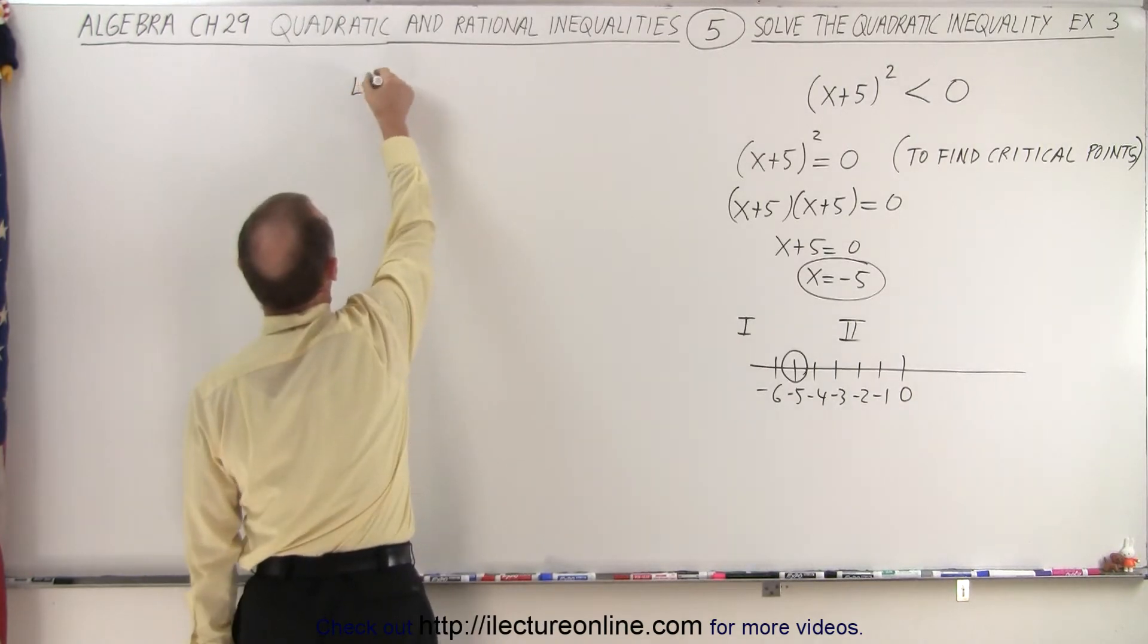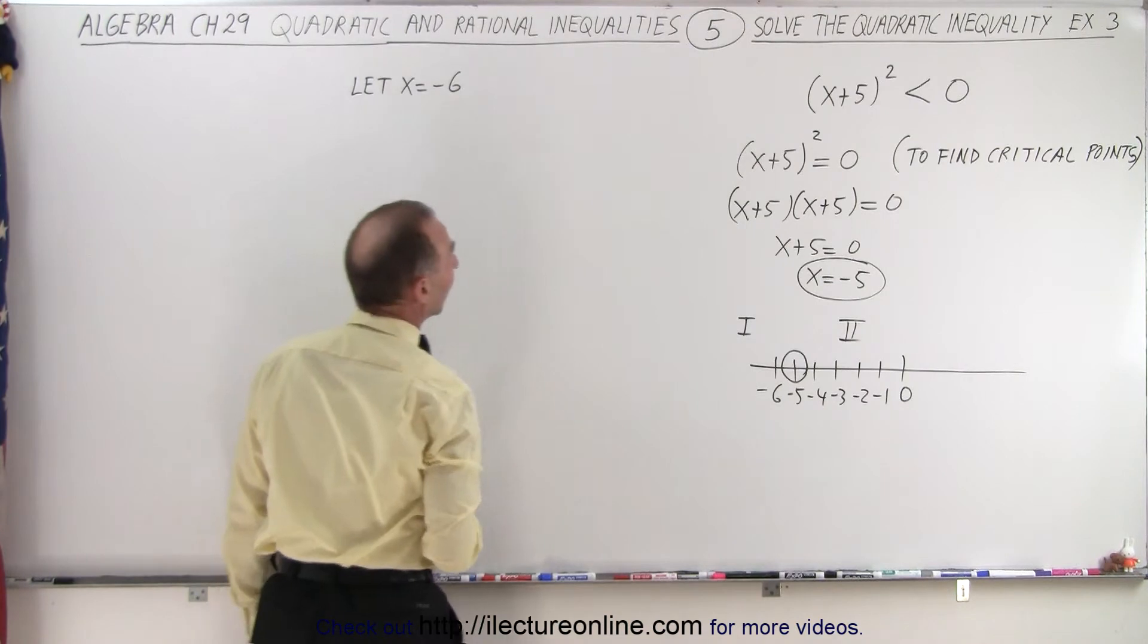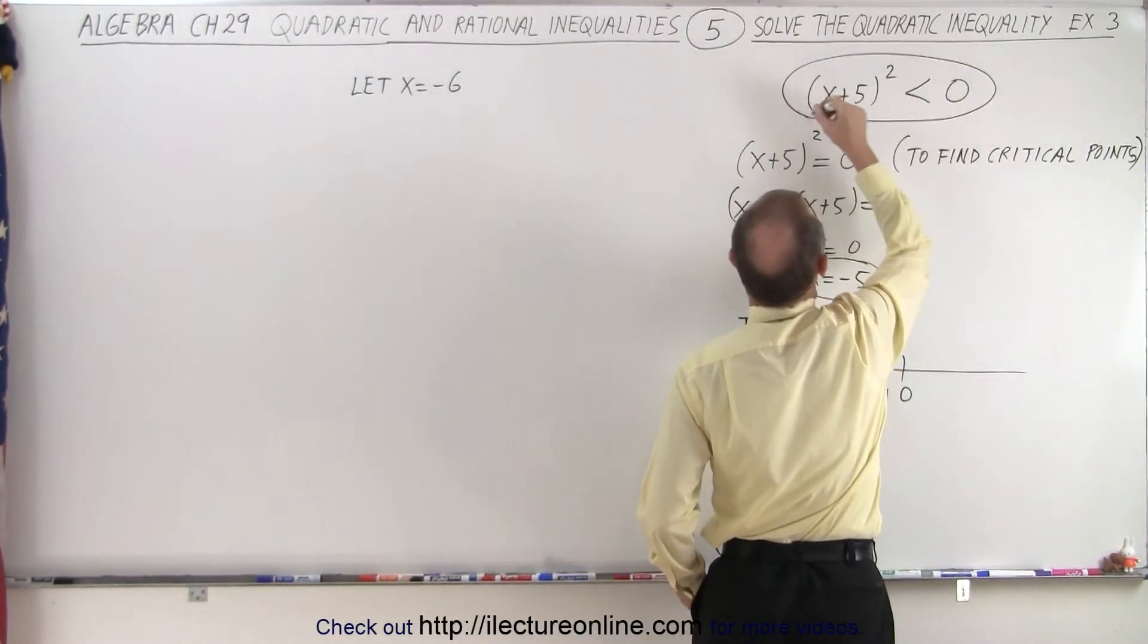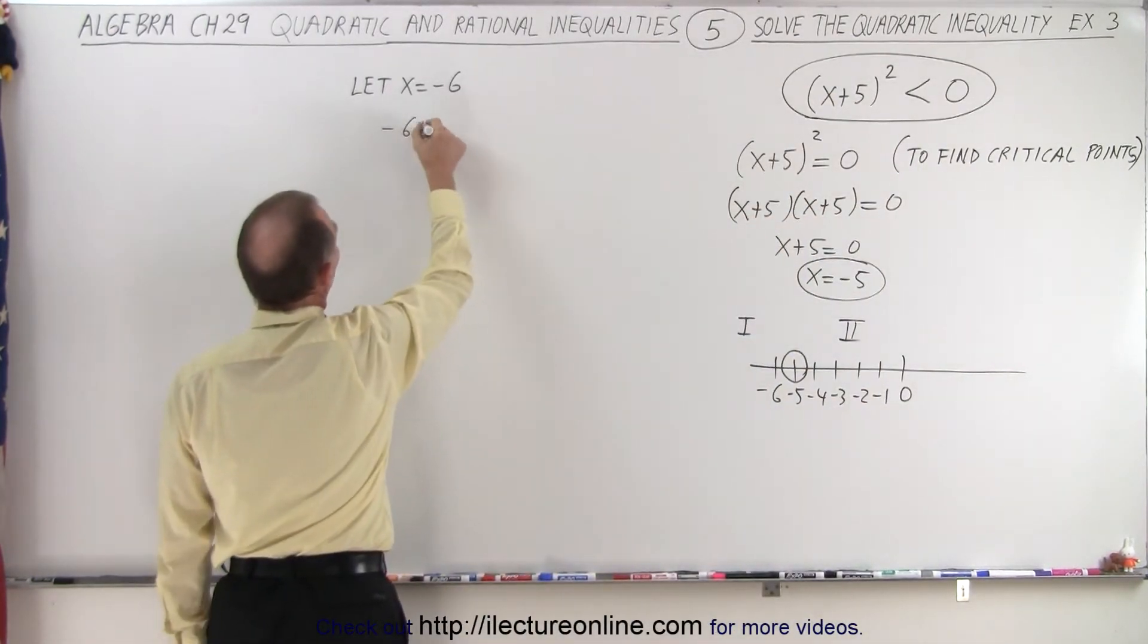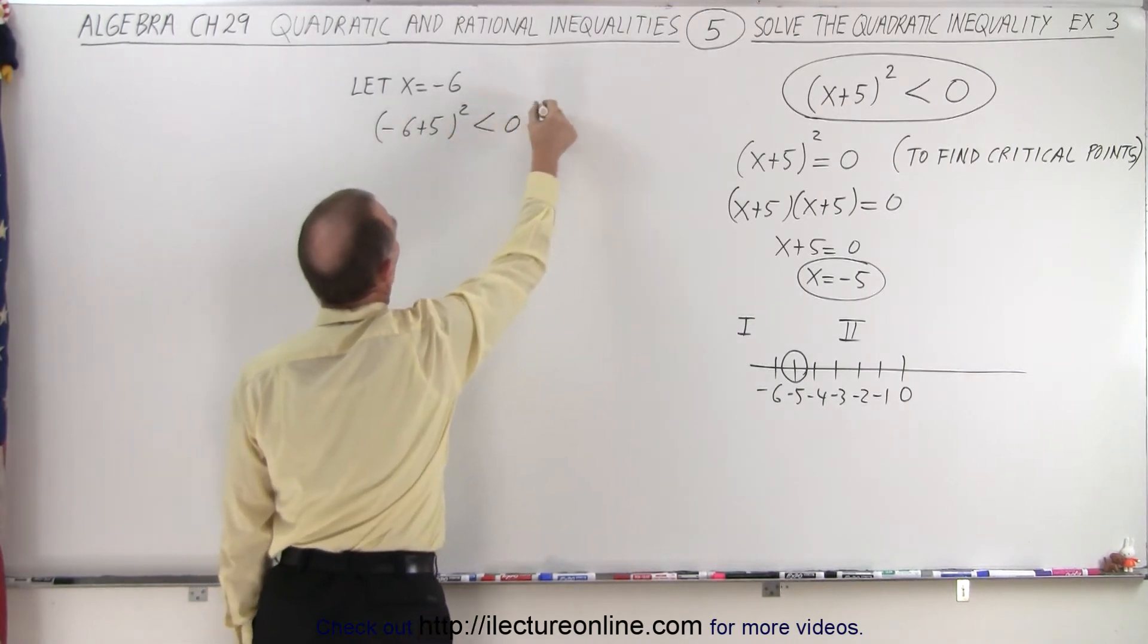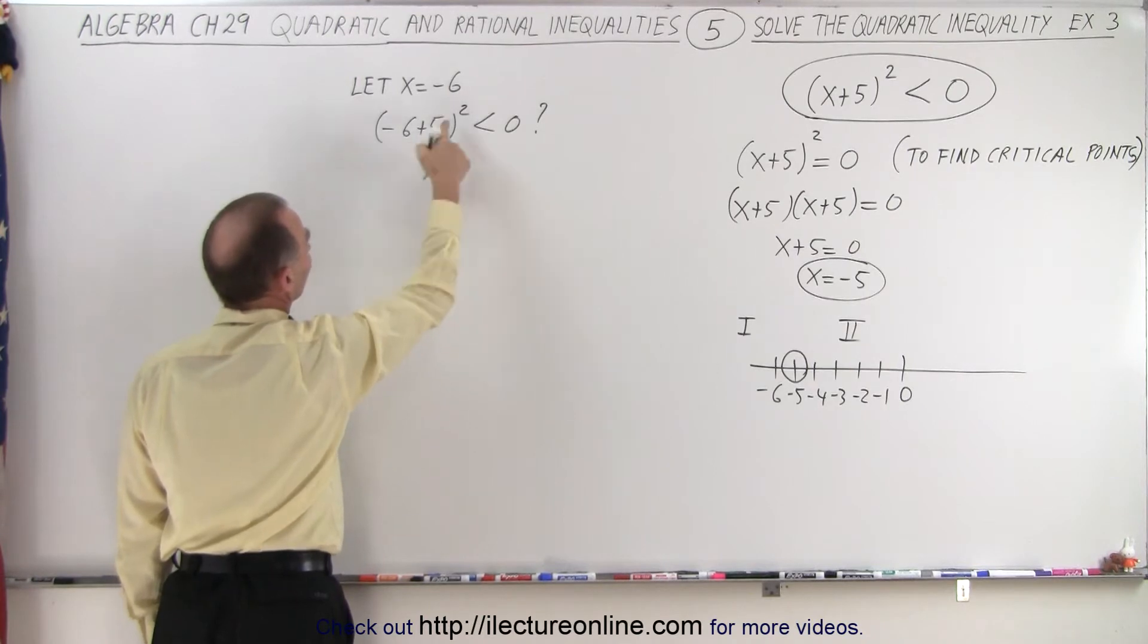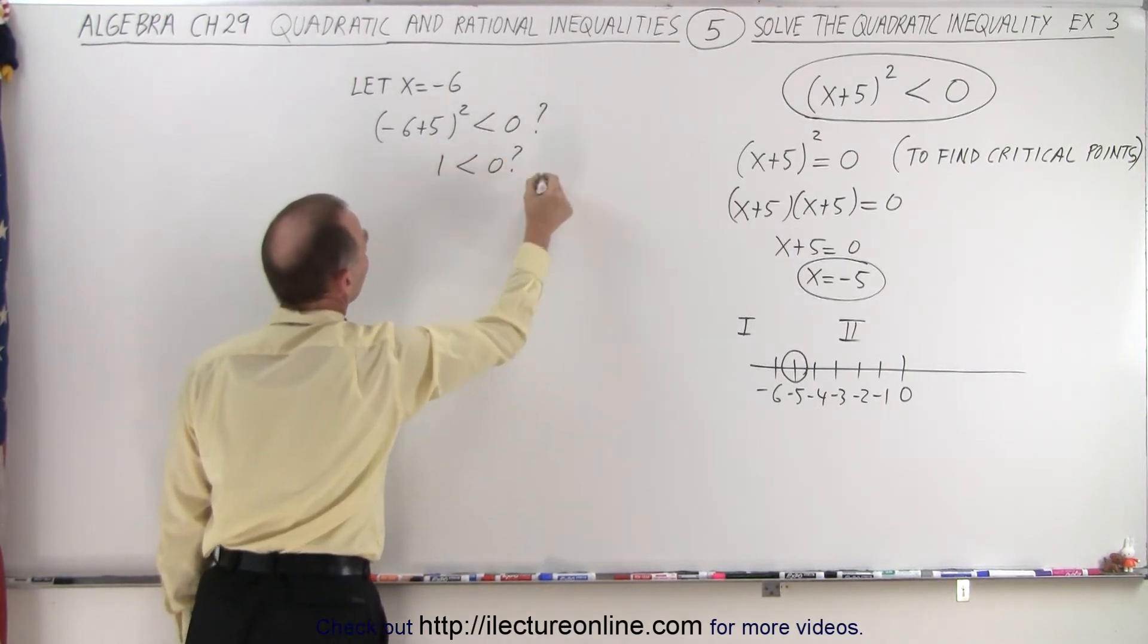So we're going to let x equal negative 6. And we plug that into our original inequality. So negative 6 plus 5 quantity squared is that less than 0 question mark. So negative 6 plus 5, that's negative 1. Negative 1 squared is positive 1. So it's 1 less than 0 question mark. And the answer is no.